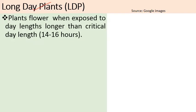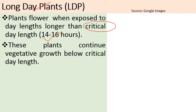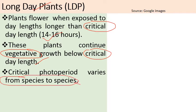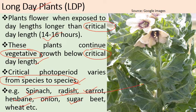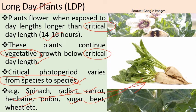Long day plants, as the name indicates, require a day duration more than the critical day length — that is 14 to 16 hours. These plants continue to grow vegetatively if the photoperiod is below the critical day length. The critical photoperiod varies from species to species in long day plants also. Examples of long day plants are spinach, radish, carrot, henbane (Hyoscyamus niger), onion, sugar beet, and wheat. Hyoscyamus niger is the most common example of a long day plant.